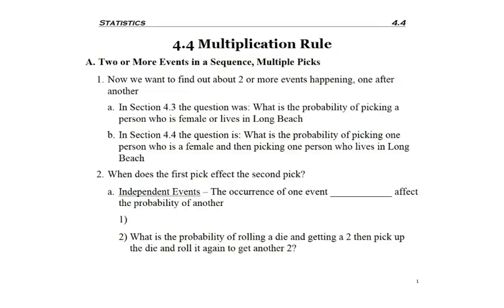An example just to make sure it's clear: in the section that we just finished, we asked the question 'What is the probability of picking a person who is female or lives in Long Beach?' In this case, we only picked one person. We were looking at two different attributes for the person, but only one person was selected.